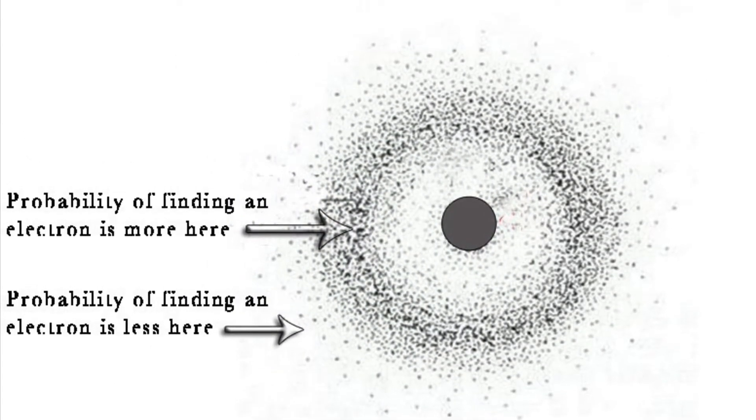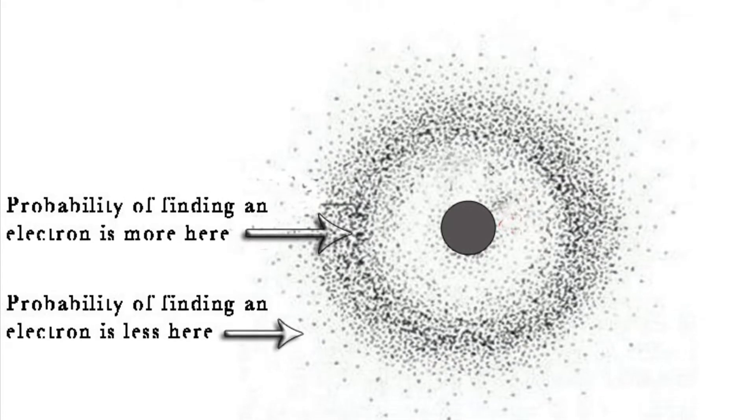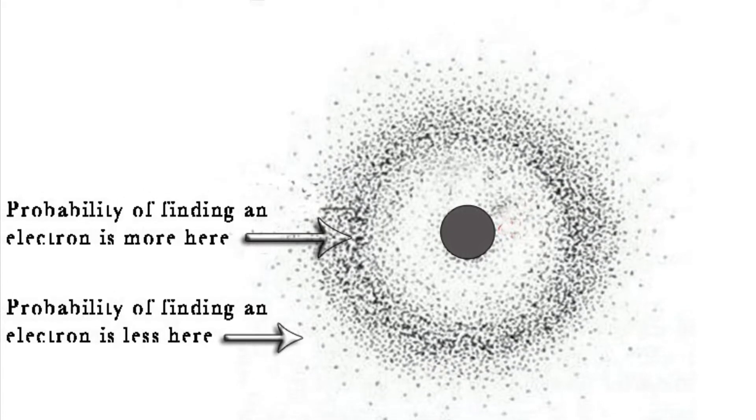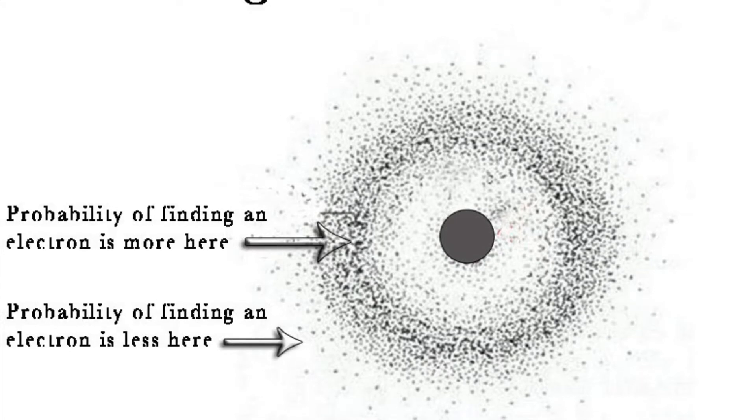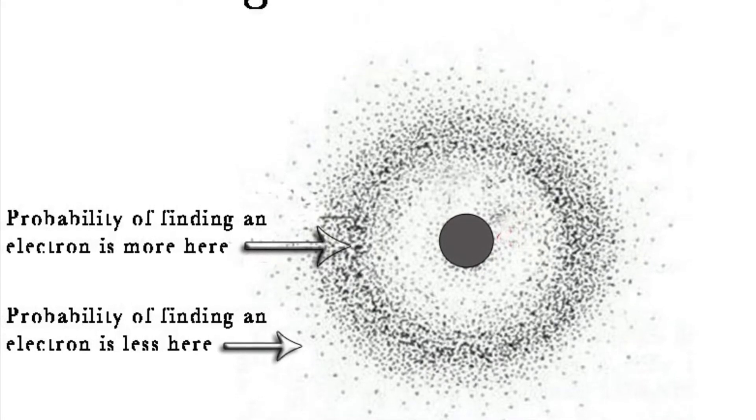As previously established, electrons have properties of both particles and waves. Because they have properties of both, we cannot define an electron's exact location in an atom.